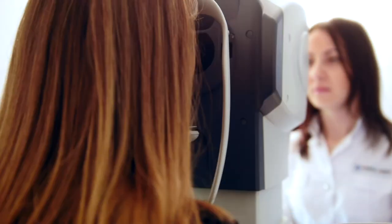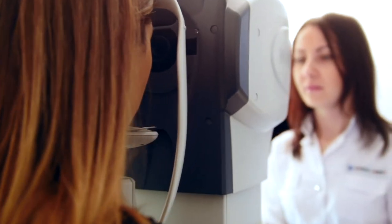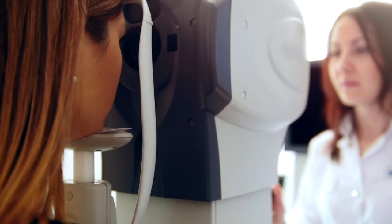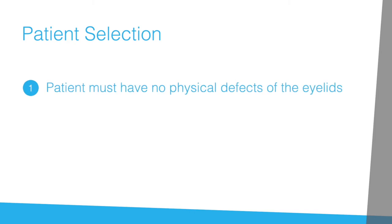Before applying Omnigen, the patient should be assessed to ensure that they are suitable for the treatment. The following criteria must be assessed on a patient-by-patient basis. First, the patient must have no physical defects of the eyelids that could dislodge the OmniLens. Caution should be taken if a patient is considered high risk for treatment with a bandage contact lens.